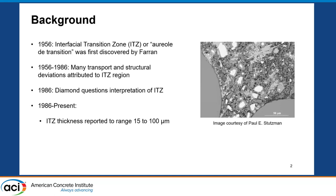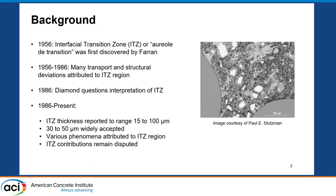ITZ continued to be studied, and it's been reported to be anywhere from 15 to 100 microns in thickness, but most widely accepted as 30 to 50 microns. It's still being studied today, and many phenomena that we see from transport and structural deviations have been attributed to this region. Diamond had also done other work with students that still questioned to what extent ITZ really contributes to the various things that we see.